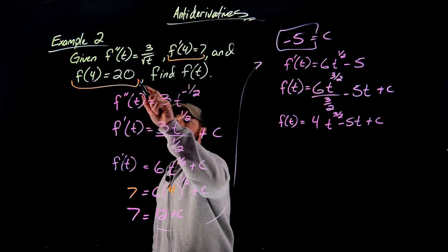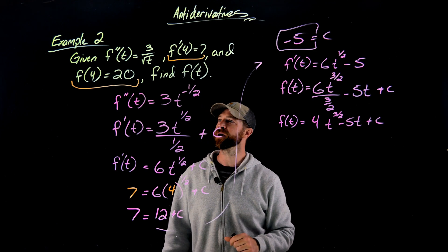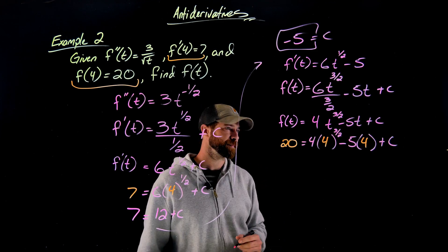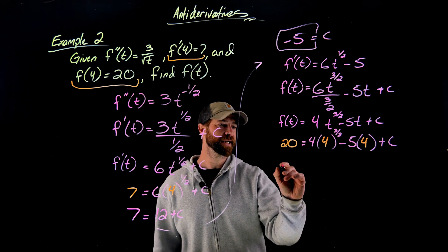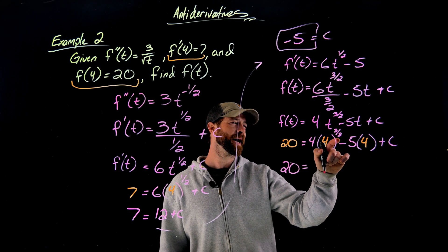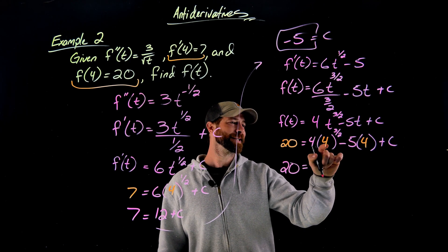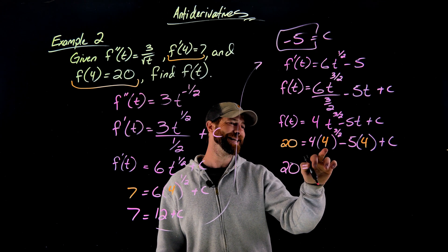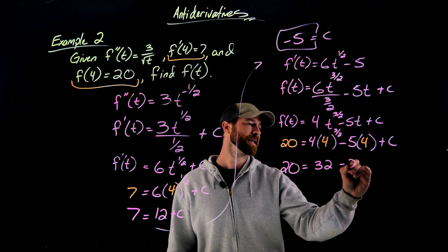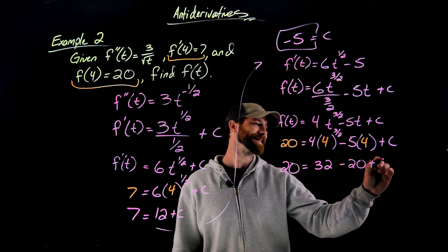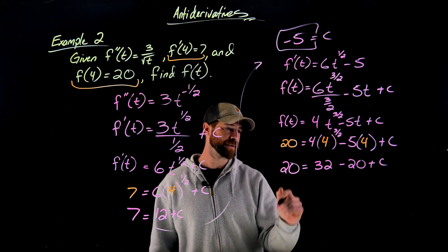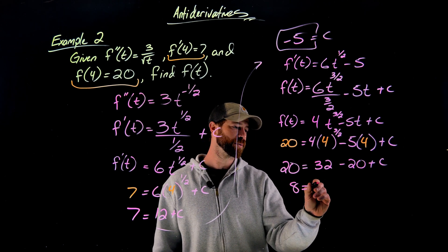Now, employing this initial condition information for f of t, when I plug in a 4 here, I need to get out a 20. Now all I need to do is simplify this and solve for c. What I'm going to get is 20 equals 4 to the 3 halves. By the way, I take the square root to get 2, 2 cubed is 8. So this is 8 times 4 to give me 32 in this term, and this is minus 20 plus c. These two terms give me 12. I'm going to subtract 12 from both sides to get 8 equals c.